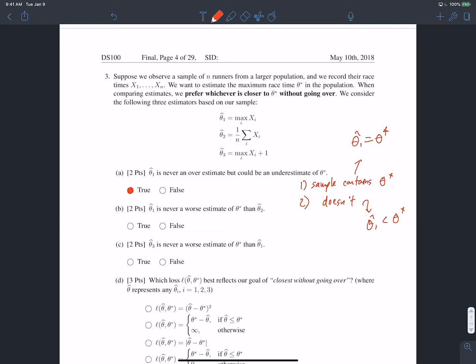In B, we're asked, theta 1 hat is never a worse estimate of theta star than theta 2 hat. That is also actually true. The only time when these two are equal is when all n times that we've sampled happen to be the same. That's the only case when the maximum of a set is equal to the average of a set. In all other cases, theta 1 hat will be greater than theta 2 hat. And since we're trying to estimate the largest value in a population, and we know theta 1 hat will never be an overestimate, we know that theta 1 hat will always be better than theta 2 hat, because it will always be bigger. Of course, unless we have the case when all the values in our sample happen to be the same.